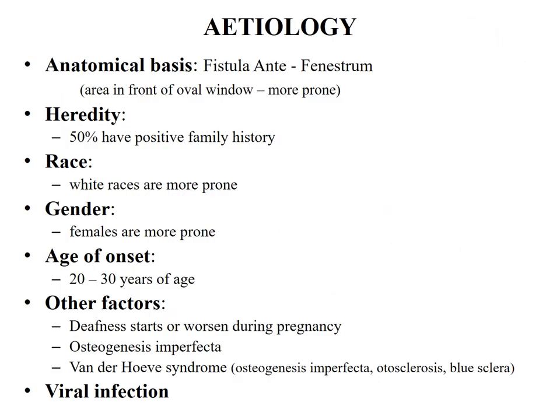Etiology: as already mentioned, the exact cause is not known. The anatomical basis is that the bony labyrinth is made up of enchondral bone, which is subject to little change in life. But sometimes in this hard bone there are areas of cartilage rest, which due to certain non-specific factors are activated to form new spongy bone. One such area is the fistula ante fenestram, which lies in front of the oval window and is more prone to involvement in this new bone formation.